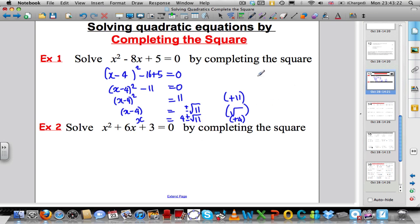x is equal to 4 plus or minus root 11. What that means for clarification is there are two answers. One is 4 plus the square root of 11, and the other is 4 minus the square root of 11. If you use the quadratic formula, you would get exactly the same answer.